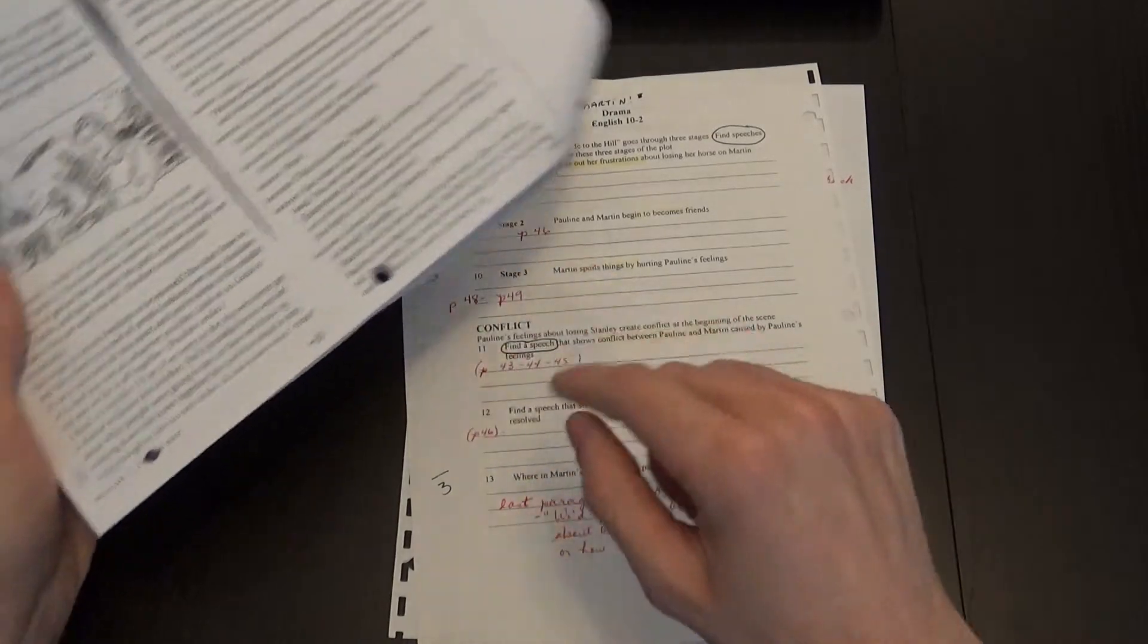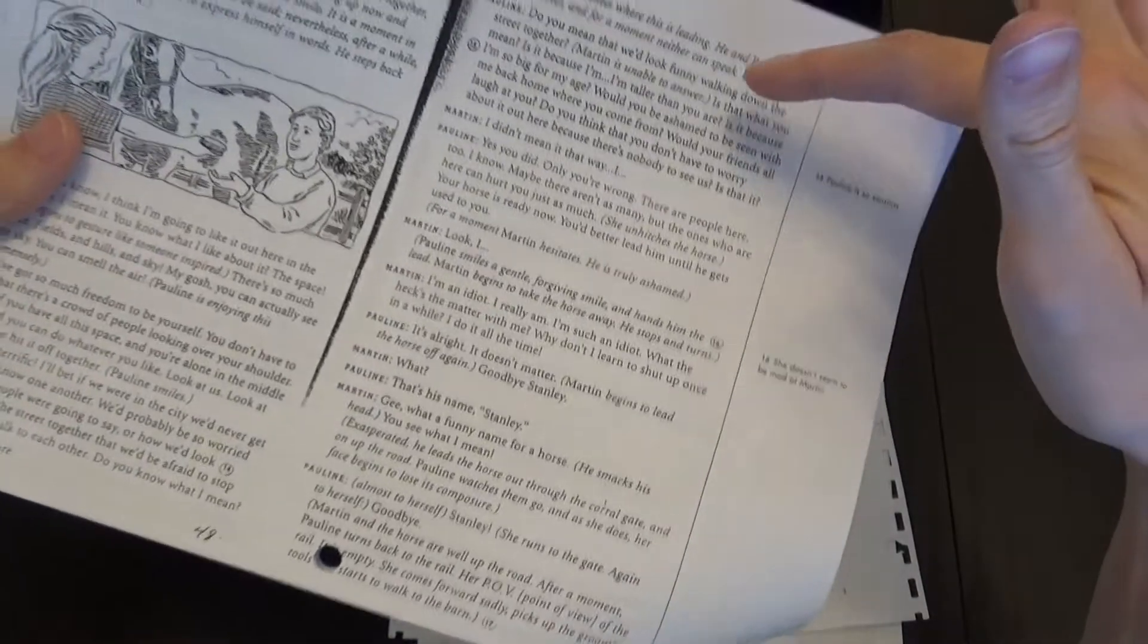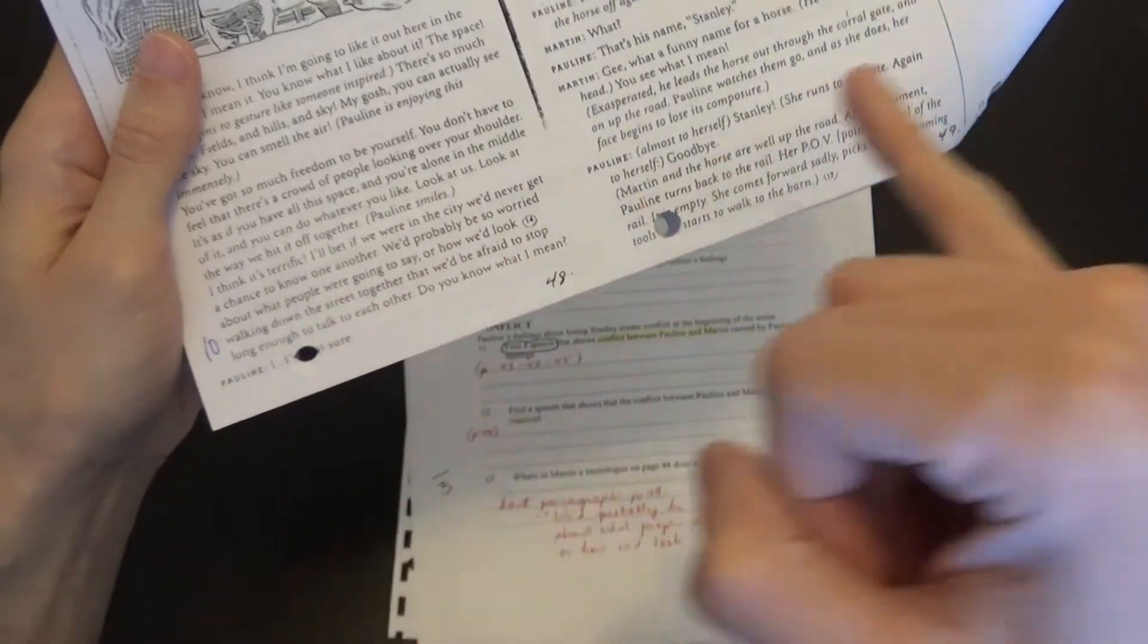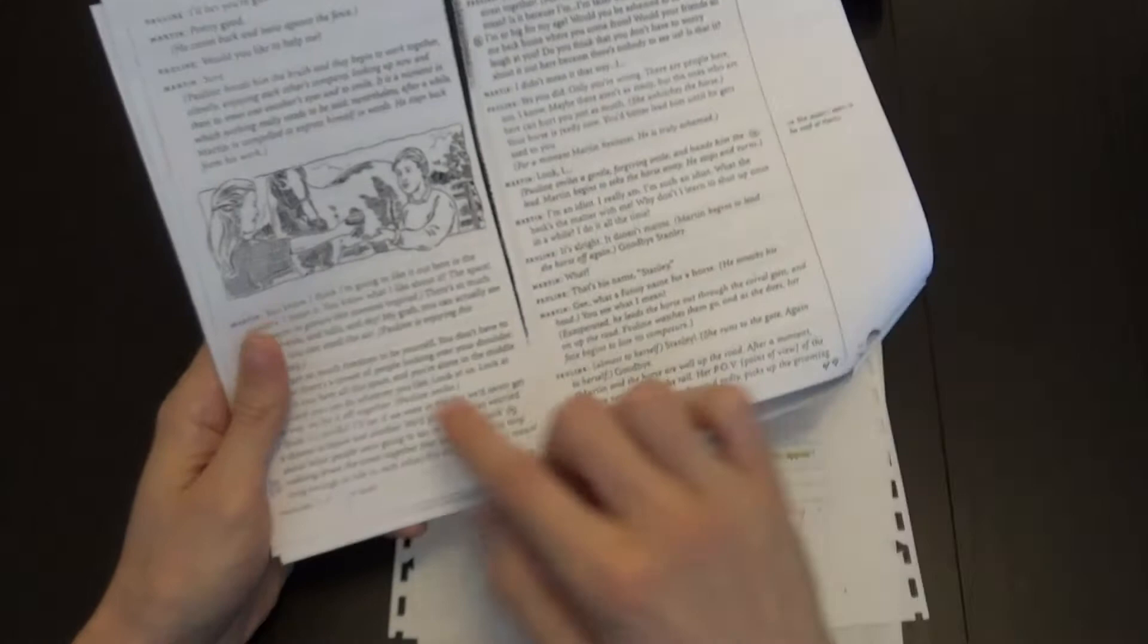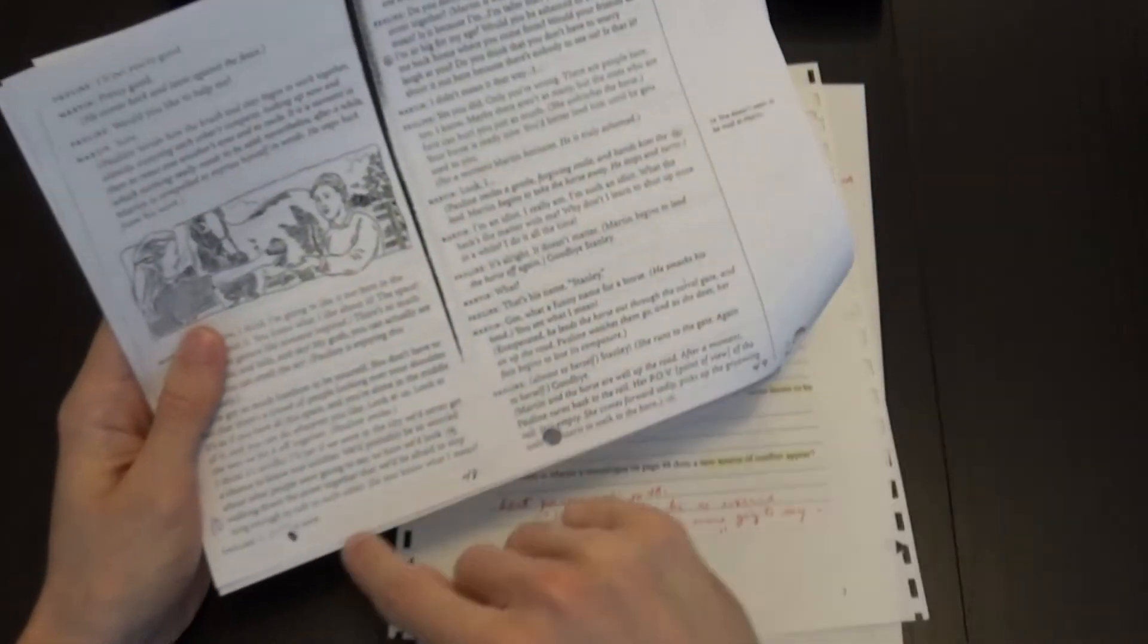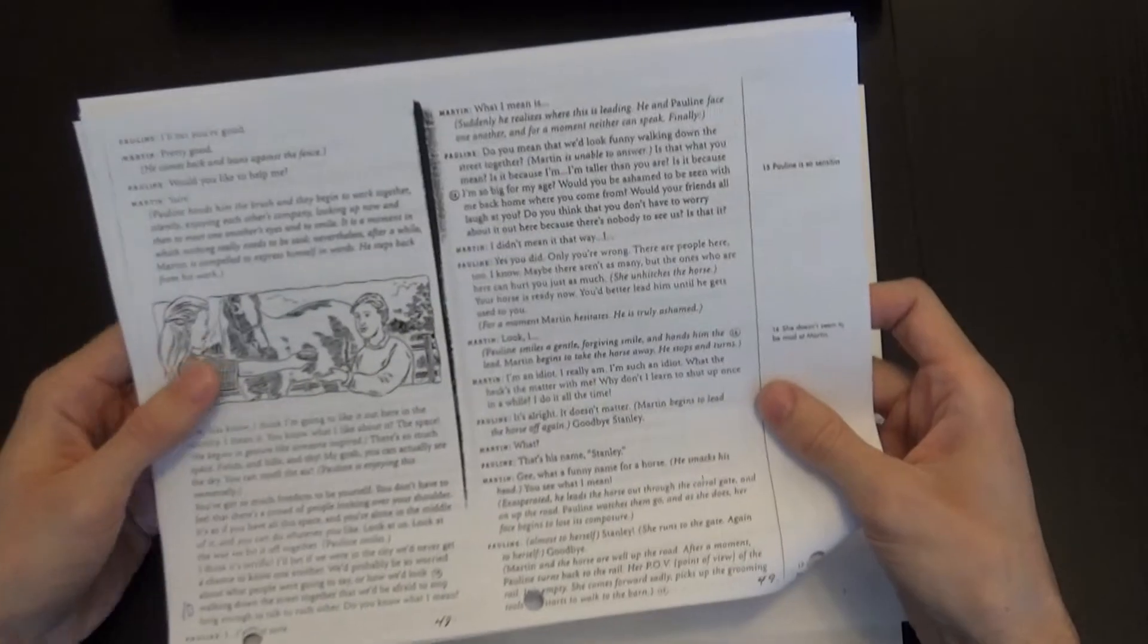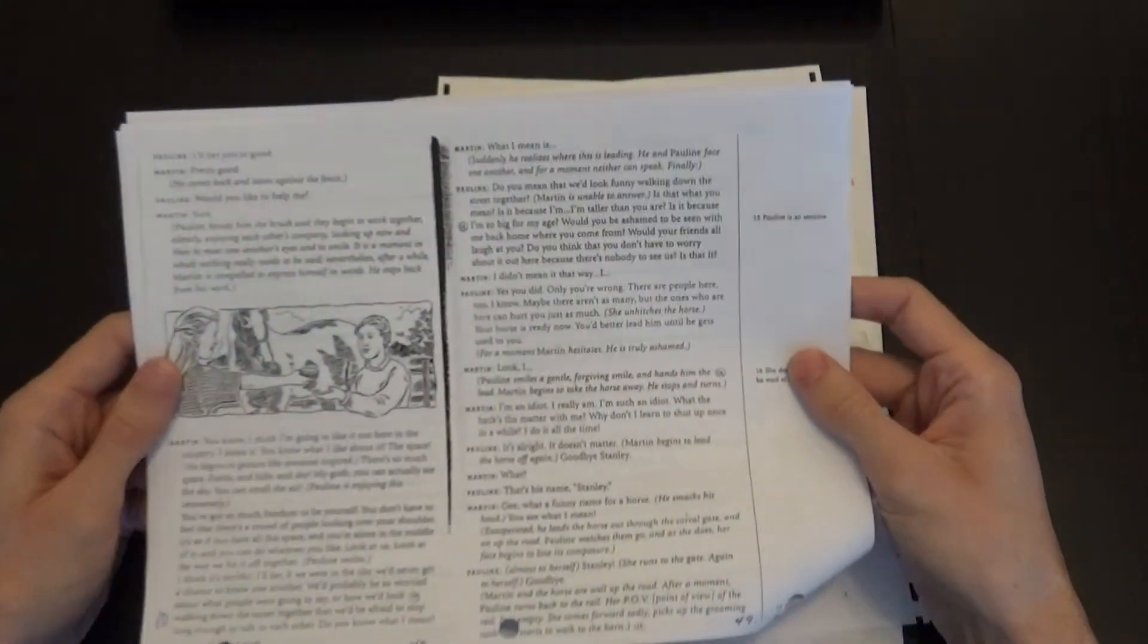And then for question 10, if they would have met in the city, so bottom of page 48 and top of page 49, then they probably wouldn't have known each other or talked to each other because they would have looked weird together and Martin would have felt like his friends could have laughed at them. And then when she started to realize where he was going with this, then she started to be upset. And that's how he hurt her feelings.